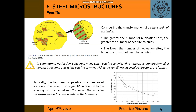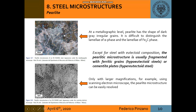If we consider the transformation of a single grain of austenite, we see that if nucleation is favored, many small pearlite colonies — a fine microstructure — are formed. Instead, if growth is favored, only a few pearlite colonies with large lamellae — a coarse microstructure — are formed. Moreover, the finer the lamellar microstructure, the greater the hardness, typically around 200 to 350 HV. At the top we see pearlite appearing as dark grey in regular grains; only with larger magnification is it possible to distinguish the lamellae of alpha phase and the lamellae of iron-carbide phase.